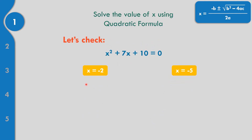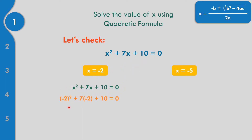Let us check if X equals negative 2 satisfies the given quadratic equation X squared plus 7X plus 10. Replacing X by negative 2: negative 2 squared plus 7 times negative 2 plus 10 equals 0. Negative 2 times negative 2 is positive 4. 7 times negative 2 is negative 14, plus 10 equals 0. 4 minus 14 is negative 10, plus 10 equals 0. The first value X equals negative 2 is correct.